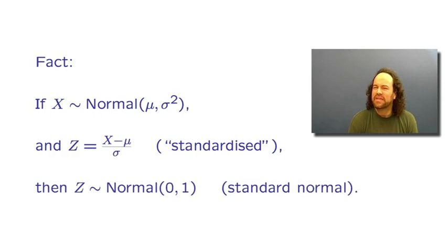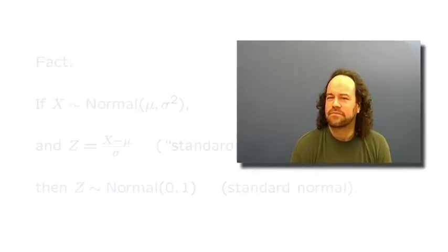We have lots of different probability distributions. One nice fact: if x has the normal(μ, σ²) distribution, then we can standardize it by subtracting off the mean and dividing by σ, giving a new quantity z which has the standard normal distribution, also called normal(0, 1). This shows the relationships between all these different continuous distributions.